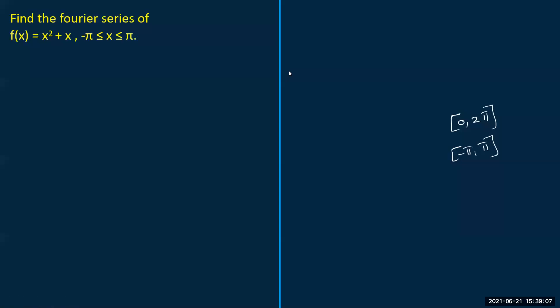Let us take this question now: find the Fourier series expansion of f(x) = x² + x, where x varies between -π and +π. For these values of x, let us find the Fourier series expansion.